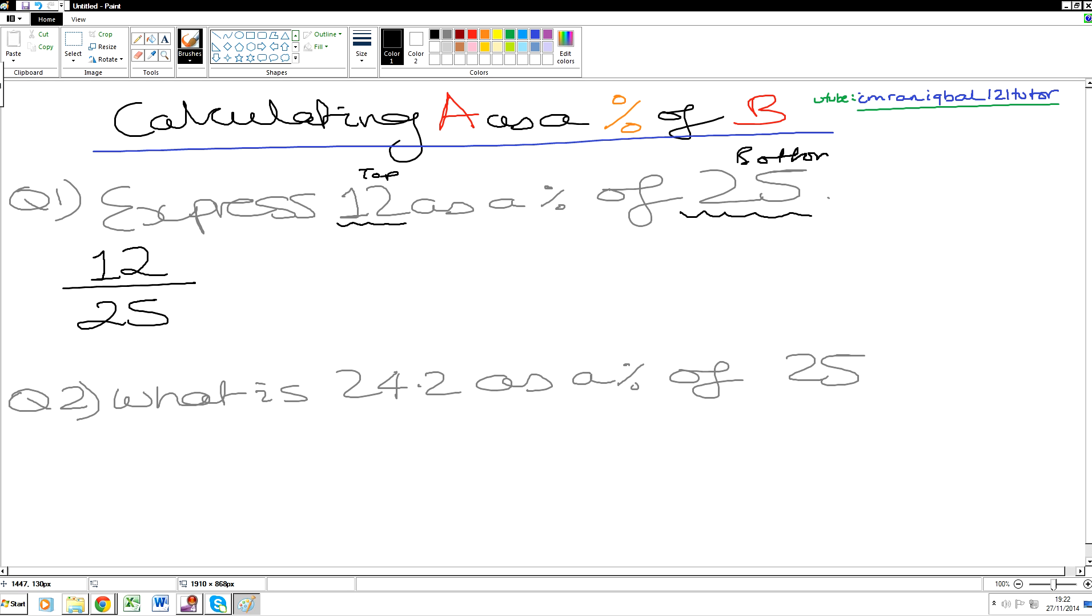So the first number goes on the top and the second number in the question goes on the bottom. Now that we converted the English verbal sentence into a fraction, the next question is: students, how do we change this fraction into a percentage? What do we do, Mr. Moyes? Times it by...